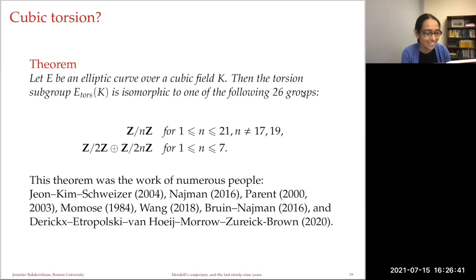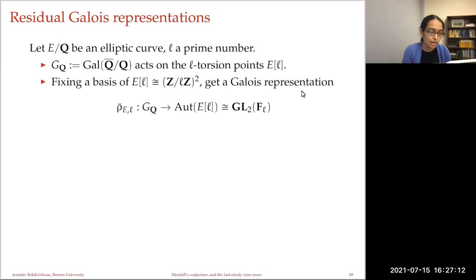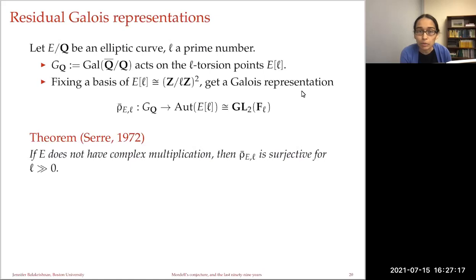We could keep going and consider quartic torsion and so on. But extending the story, consider modular curves associated to Galois representations. If I take an elliptic curve over Q and fix a prime l, then we have an action of the absolute Galois group on l-torsion. Fixing a basis, we get the residual Galois representation rho-bar_{E,l} and can study its image in GL₂(F_l).